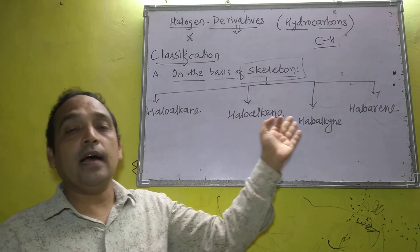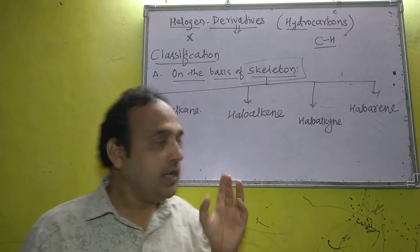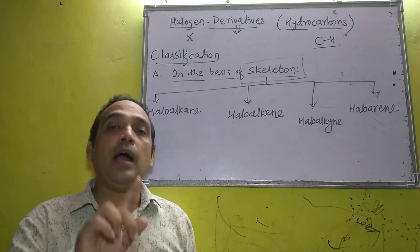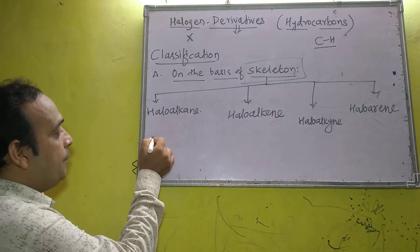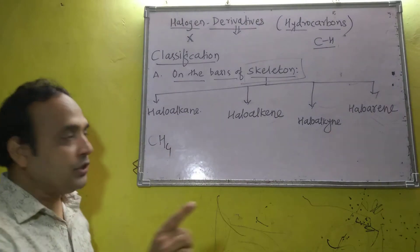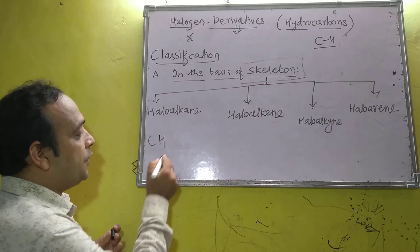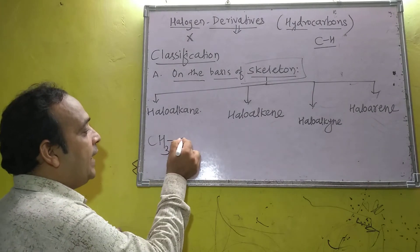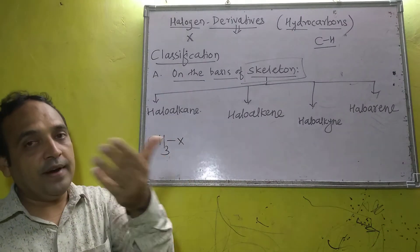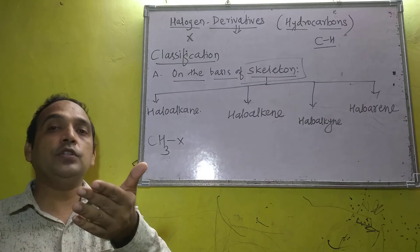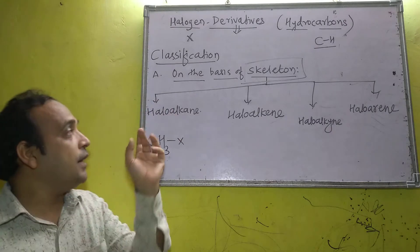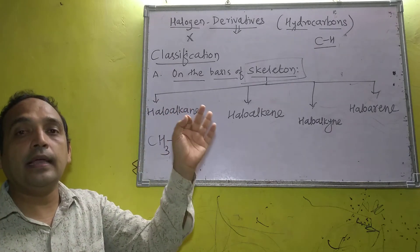Alkane, alkene, and alkyne are the hydrocarbons. For haloalkane: when a hydrogen atom from alkane is replaced — for example, methane is CH4; when one hydrogen atom is replaced, CH4 converts to CH3, and that hydrogen is replaced by a halogen atom. Such compounds are called haloalkanes.